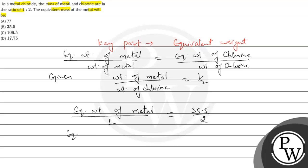So equivalent weight of metal is equal to 17.75. This is our final answer, so option D is the correct answer.